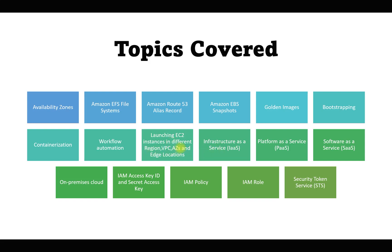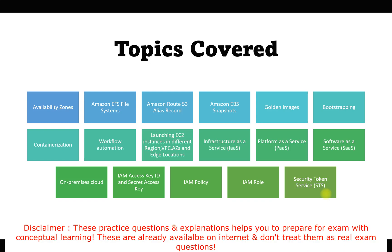We will also understand cloud computing models like IaaS (Infrastructure as a Service), PaaS (Platform as a Service), and SaaS (Software as a Service). We'll cover deployment models such as on-premises, cloud, hybrid cloud, public cloud, and private cloud. Additionally, we'll cover IAM services — IAM access key ID, secret access key, IAM policy, IAM role, and the Security Token Service — when to use each.